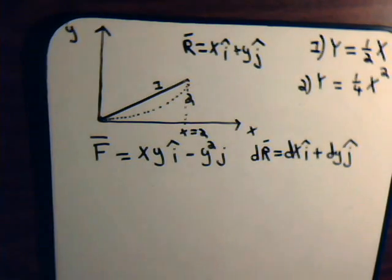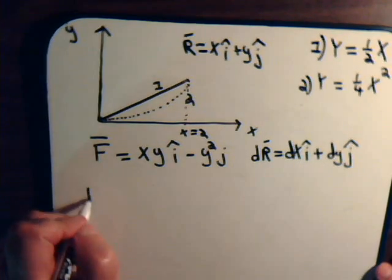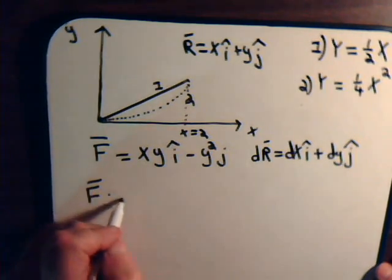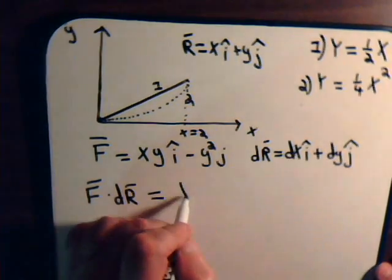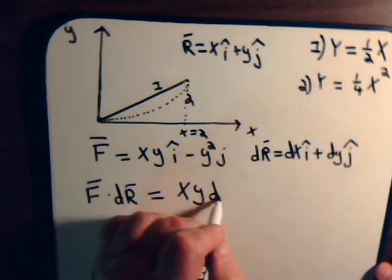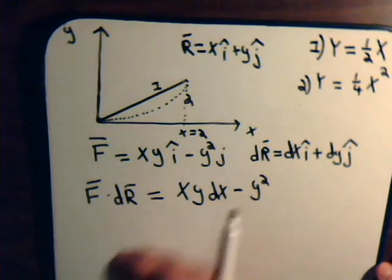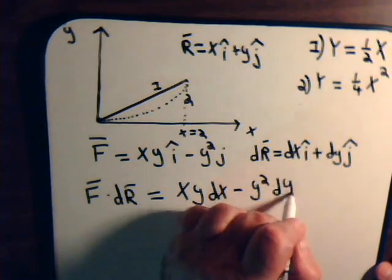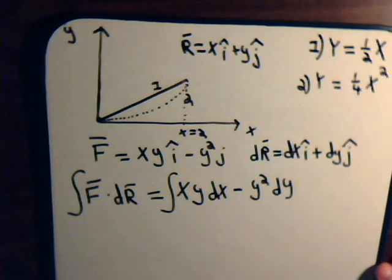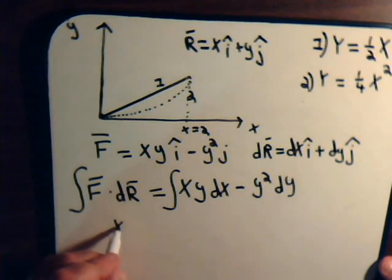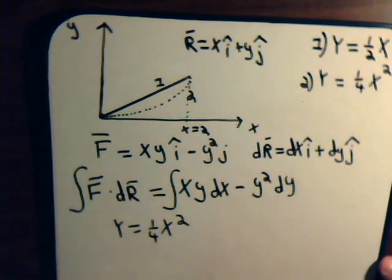So, let's see how this works out. We have again, F dot dR, we didn't have to erase that. It's the same thing. xy dx minus y squared dy.